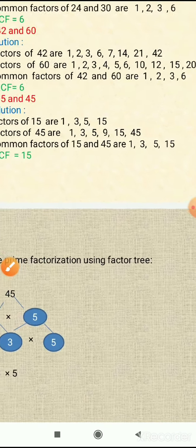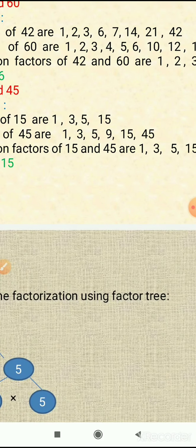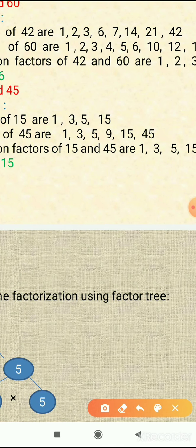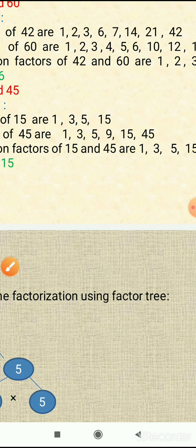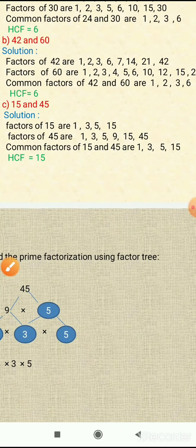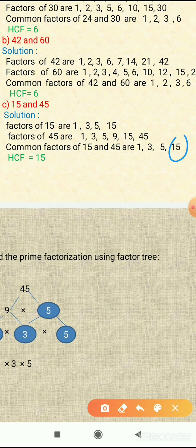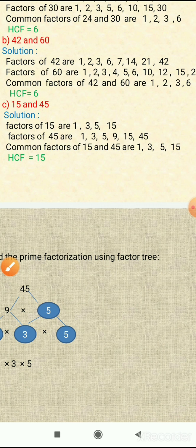Now we will find the common factors of 15 and 45. We encircle them. The first common factor is 1, the next is 3, then 5, and 15. So these are the common factors of 15 and 45. Among these, the highest common factor is 15, so HCF of 15 and 45 is 15.